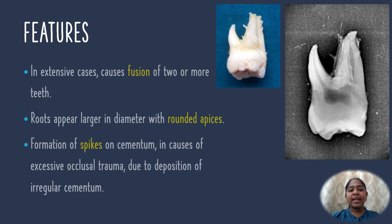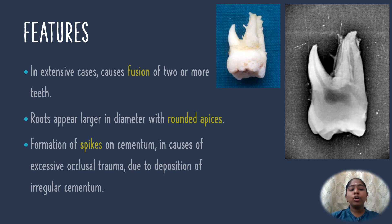In extensive cases, hypercementosis causes fusion of two or more teeth. The roots appear larger in diameter with rounded apices. Formation of spikes on the cementum may occur in cases of excessive occlusal trauma, due to deposition of irregular cementum.